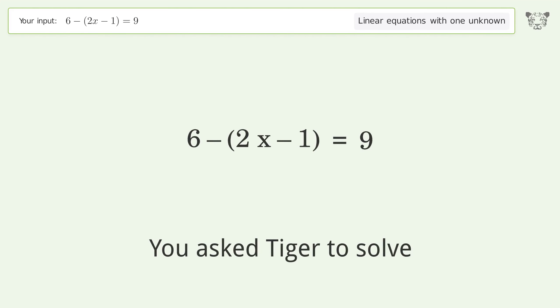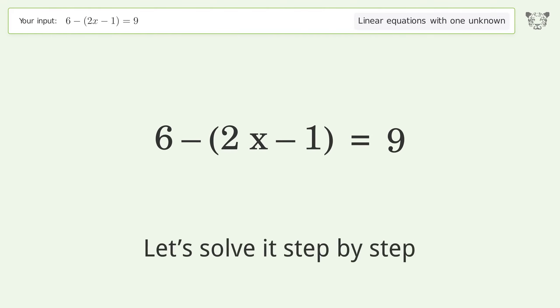You asked Tiger to solve this problem dealing with linear equations with one unknown. The final result is x equals negative one. Let's solve it step by step and simplify the expression.